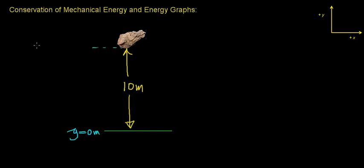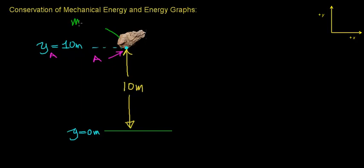That would mean that the point up here would be y equals 10 meters, indicating that this point is 10 meters above the ground. Instead of constantly saying it's 10 meters above the ground, let's label this as point A, with height y_A. Now let's say that the mass of the rock is equal to 10 kilograms.